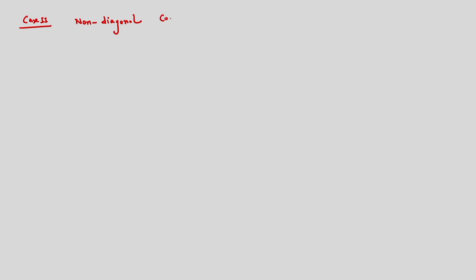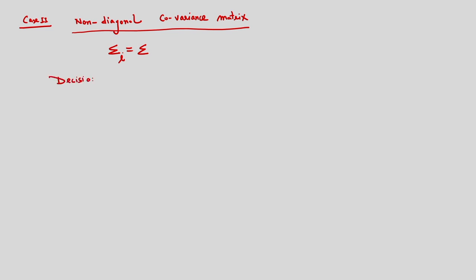Now let us go to case number 2. In case number 2, we are considering a non-diagonal covariance matrix. The covariance matrix is still the same for all classes, but it is not diagonal. In case 1 we considered a diagonal matrix, but here we consider a non-diagonal covariance matrix. Corresponding to this case, the decision surface g_ij(x) = W^T(x - x_naught) = 0.